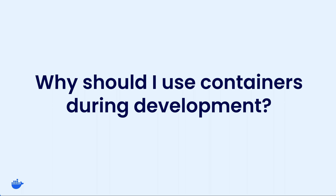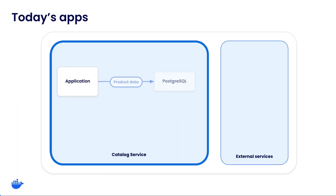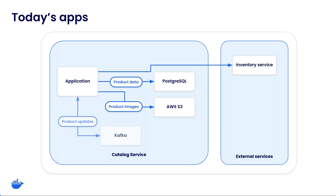Let's start off by looking at a sample application. Most apps are composed of many different services. This particular application, a catalog service, stores its data in a Postgres database, images in blob storage such as AWS S3, and it gets inventory data from an external inventory service. Additionally, it publishes update events into Kafka to allow other services to be notified of changes.